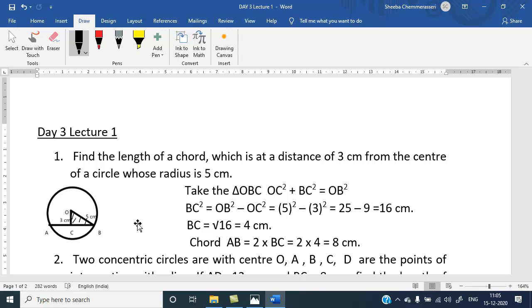So, here OB is the hypotenuse, BC is the base and OC is the altitude. So, we get OC square plus BC square equal to OB square.